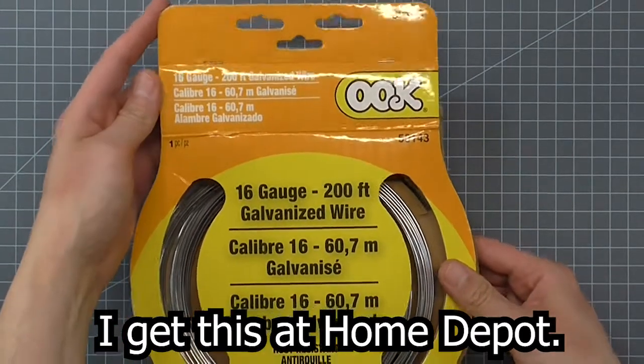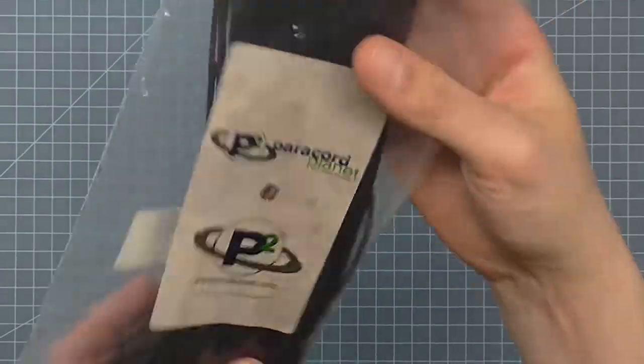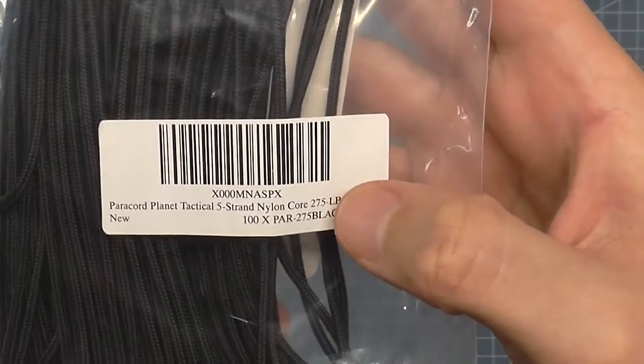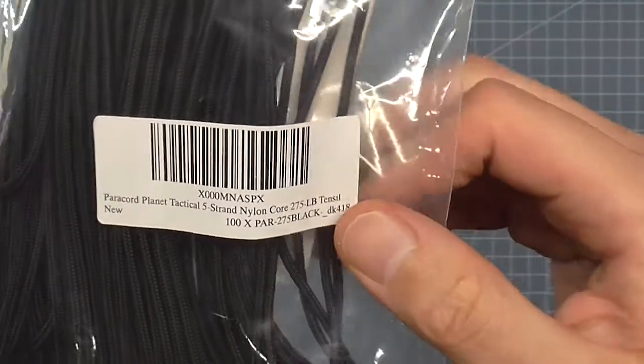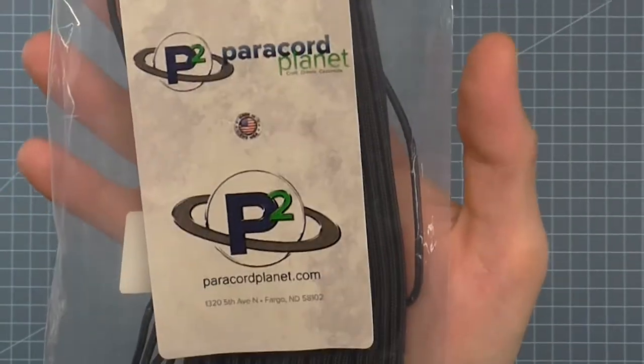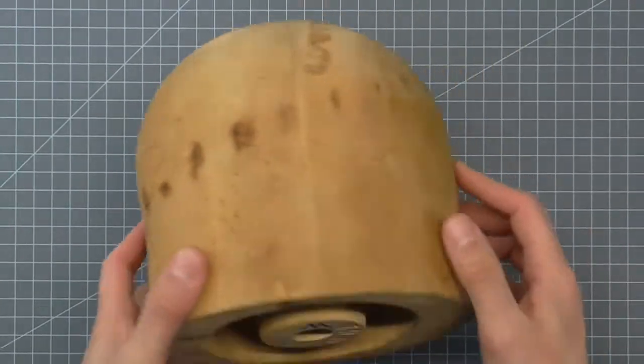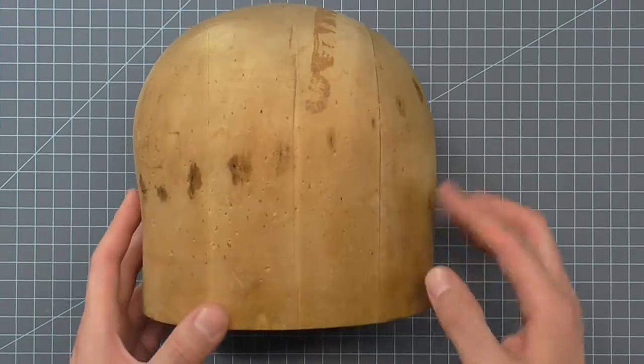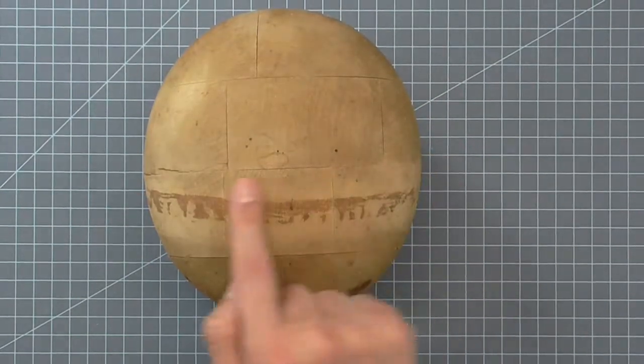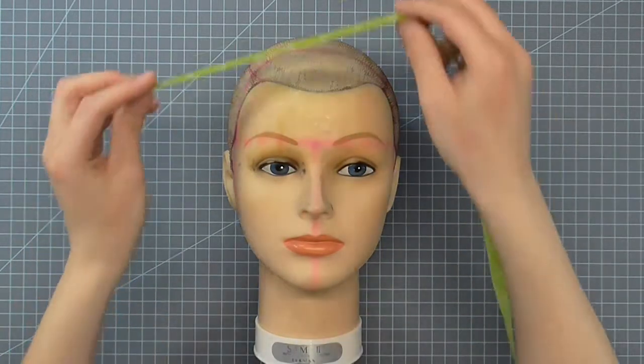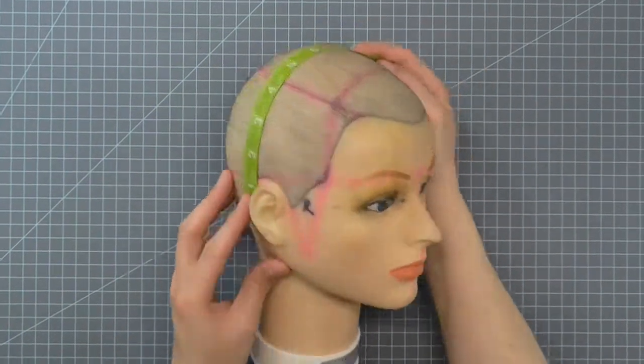You're also going to need a measuring tape, a small metal comb with at least seven teeth, 16-gauge galvanized steel wire or 14-gauge millinery wire, and the secret to this technique is 275 paracord. You cannot use 550 paracord, it's too big. It has to be 275, and I get mine from Paracord Planet. You're also going to need a basic head size shape and a cosmetology mannequin as my client.